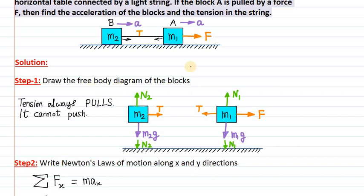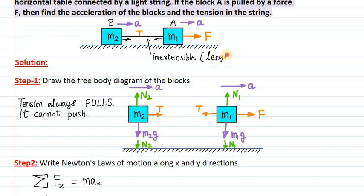Our free body diagram is now complete. Both blocks have acceleration A, and both move with the same acceleration A because the string connected between them is inextensible. Inextensible means the length of the string cannot be extended — the length remains constant. If the length of the string remains constant, the distance between the two blocks always remains constant, and because of this both must move with the same amount of acceleration.